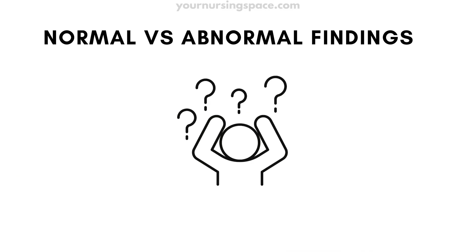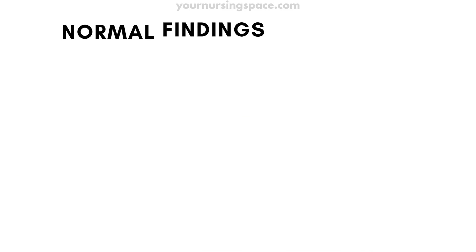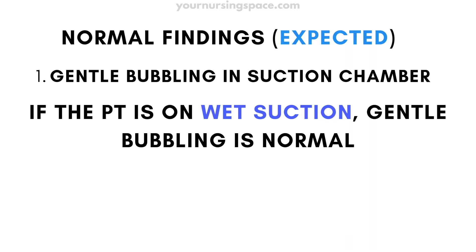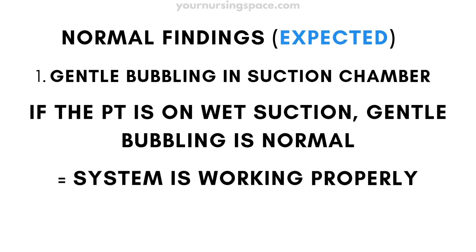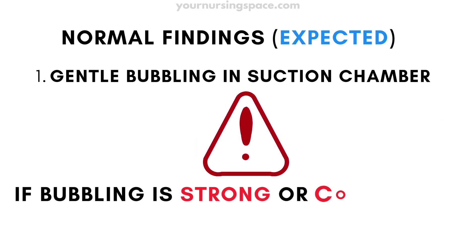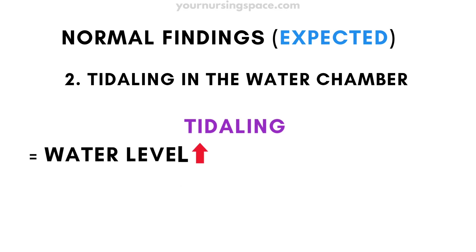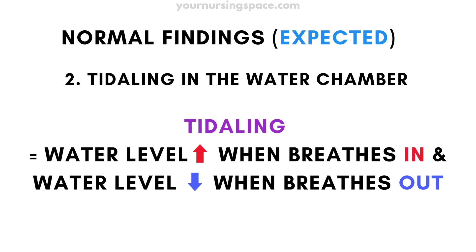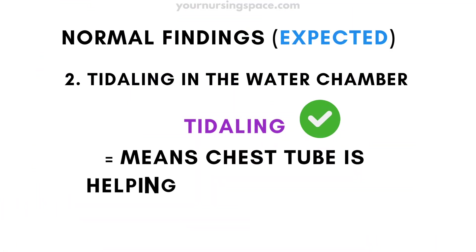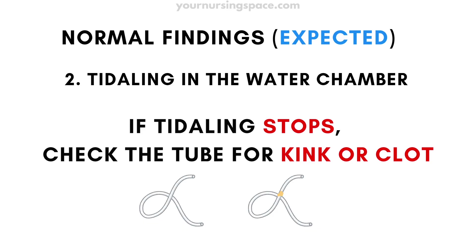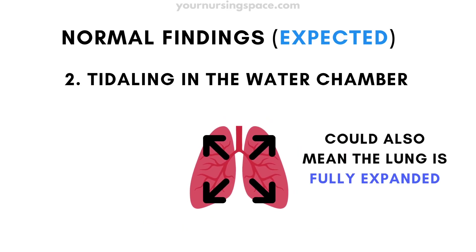How do you know if a chest tube is working correctly? Expected findings include gentle bubbling in the suction control chamber — if the patient is on wet suction, this means the system is working properly. But watch out: if bubbling is too strong or continuous, it could mean there's an air leak. Tidaling in the water seal chamber is also expected — the water level rises when the patient breathes in and falls when they breathe out. If tidaling stops suddenly, check the tubing for a kink or clot, or it could mean the lung has fully expanded.